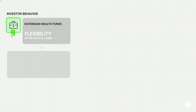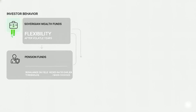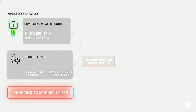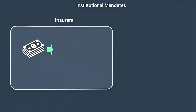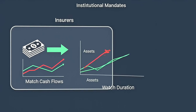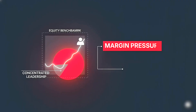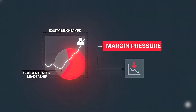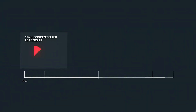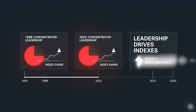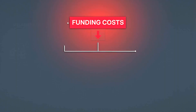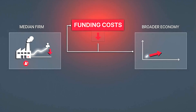Who's on the other side of the trade? Sovereign wealth funds prefer flexibility after volatile years. Pension funds rebalance on yield thresholds, but many hedged rates earlier and now face basis choices. Insurers match cash flows but watch duration mismatches carefully. Foreign central banks adjust reserves to domestic needs first. None exist to bail out issuance — they exist to meet mandates. Notice the contradiction in equity comfort: profits concentrated in a few sectors can mask broad margin pressure from funding costs. That was true in 1998 and again in 2023. Leadership helps indexes; funding costs decide investment and hiring in the median firm. The broader economy listens to the median.